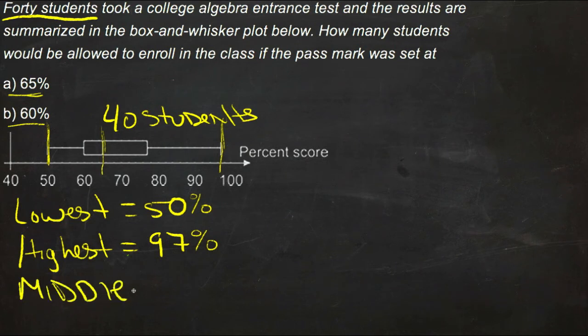If the middle is 65%, that gives us our first answer right away. Because if we want to know how many students scored 65% or above, and we know that 65% is right in the middle of our box-and-whisker plot, well, the middle of 40 students tells us that...